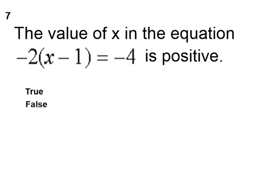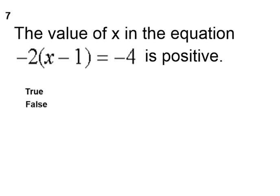Question seven, the value of x in the equation negative two times x minus one is equal to negative four. We'll have a positive x value. Is that true or false?